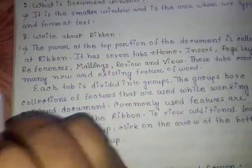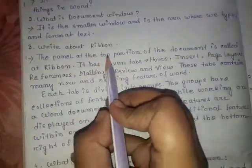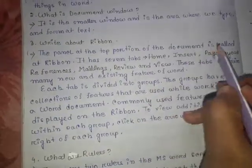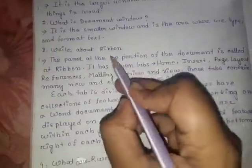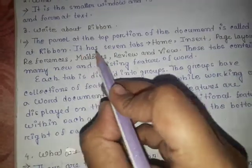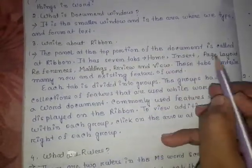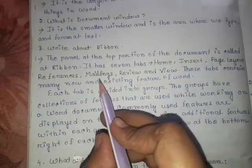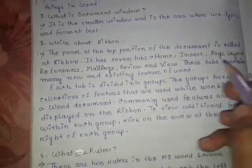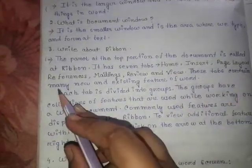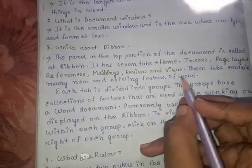Write about ribbon. The panel at the top portion of the document is called the ribbon. It has 7 tabs: Home, Insert, Page Layout, Reference, Review, and View. These tabs contain many new and existing features of Word.